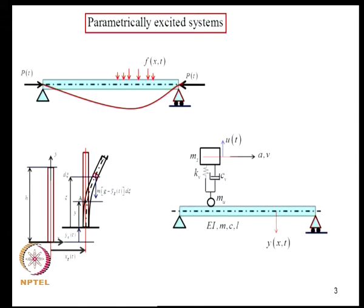Another important application in civil engineering is vehicle-structure interaction, typically encountered in bridge engineering problems. As a vehicle traverses a supporting structure like a bridge, if one writes the combined equations for the dynamics of the vehicle and the beam, the governing partial differential equation has time varying terms.